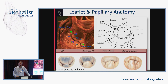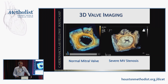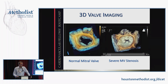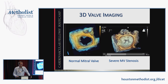Primary MR is a problem of the valve itself. This spectrum ranges from simple chordal rupture with some leaflet thickening, to more extensive rupture and thickening, to diffuse leaflet thickening and redundancy of all scallops — termed Barlow's. This continuum is called fibro-elastic deficiency, representing myxomatous changes. We now use 3D imaging to understand the valve: here's a normal mitral valve with P1, P2, P3 and the anterior leaflet, and here's severe rheumatic MS where the commissures are gone.